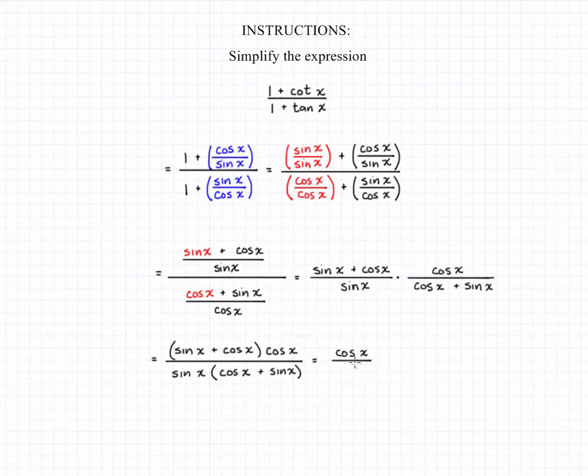And those two quantities in parentheses are actually equal to each other, so they'll divide out, which will leave us with cosine of x over sine of x, which we can simplify down to our final answer, the cotangent of x.